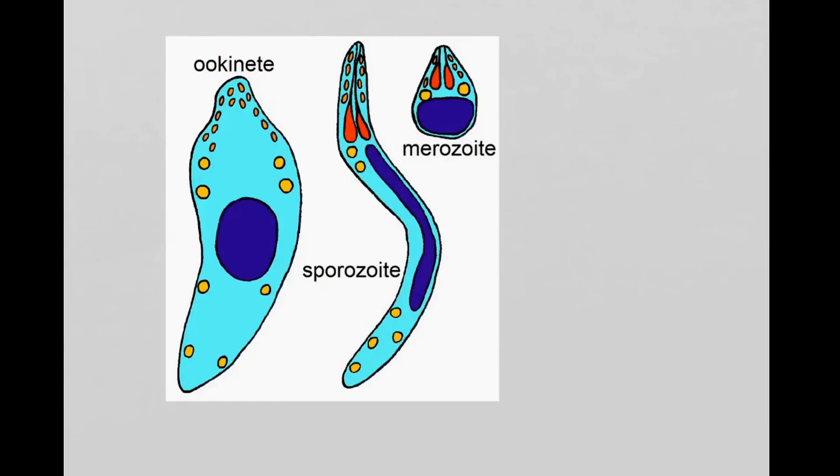When they end up in the mosquito gut, they form this ookinete, which can move around. Then it divides and forms more of these schizonts. I hope that makes sense. It shows you how complicated life is when you are a Plasmodium parasite, but on the other hand, it also shows that they are incredibly successful and very, very dangerous. Thank you very much for watching.